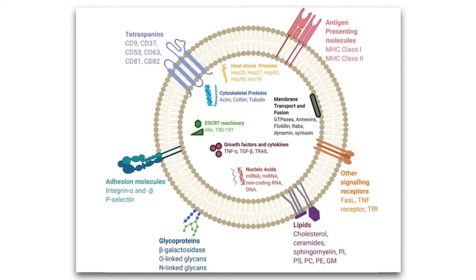Inside the exosome, of course, you have the things we've discussed in previous presentations: growth factors, cytokines, immune modulators, chemokines. You've got quite a bit of nucleic acid — RNA, messenger RNA, microRNA which is a regulatory nucleic acid — as well as other non-coding RNAs. You've also got heat shock proteins, which are stress proteins, and cytoskeletal components that can facilitate budding and endocytosis when the exosome reaches its target cell.